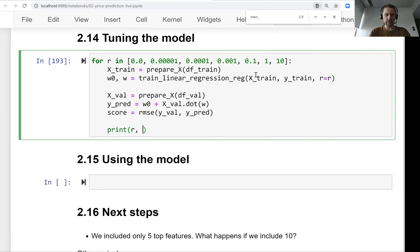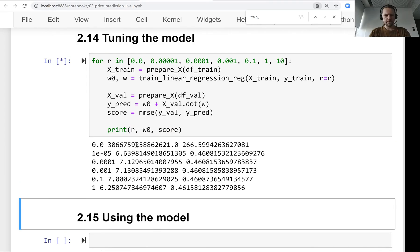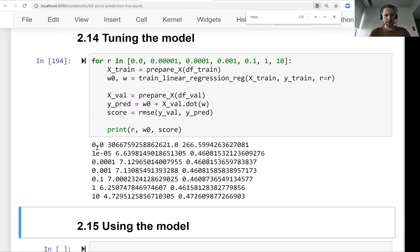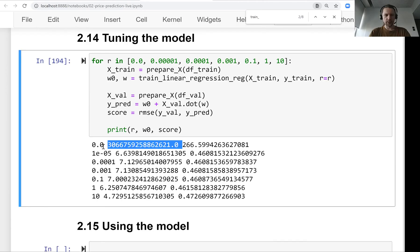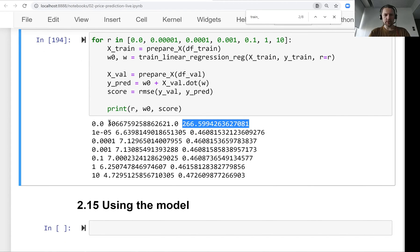Let's just print the regularization parameter, then also print the bias term and the score. What we see is for zero regularization the bias term is huge and also RMSE is huge, but for even a little bit of regularization it improves.